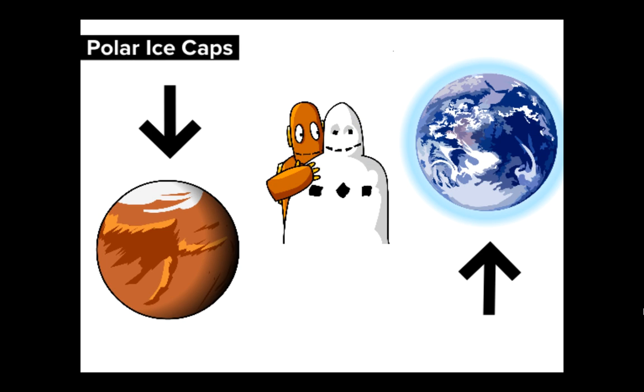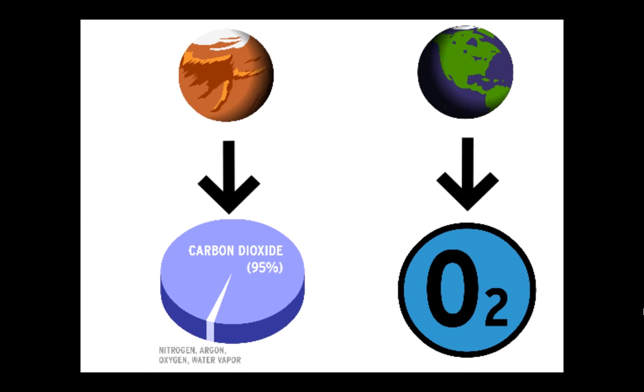They both have polar ice caps. Both Earth and Mars have carbon dioxide in their atmospheres, but Mars' atmosphere is mostly carbon dioxide, while Earth's is mostly nitrogen, and has enough oxygen to sustain life.